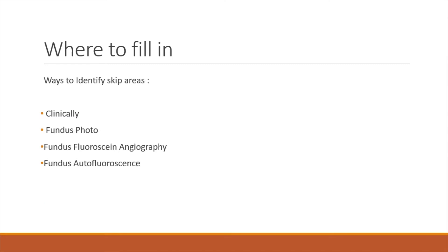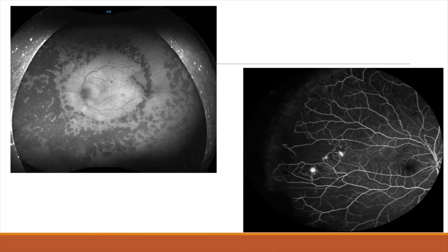Ways to identify skip areas include clinically, fundus photo, fundus fluorescein angiography (FFA)-guided, or fundus autofluorescence. The first picture shows autofluorescence-guided imaging where clear skip areas are visible in the superotemporal and temporal quadrant. This is FFA-guided — an FFA of a uveitic patient showing peripheral capillary non-perfusion (CNP) and neovascularization elsewhere (NVEs).